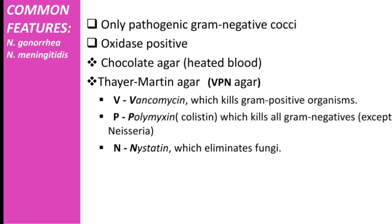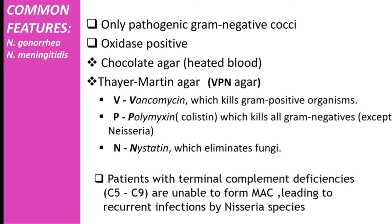Neisseria species commonly infect people recurrently. Patients with terminal complement deficiency, C5 to C9, are unable to form membrane attack complexes, leading to recurrent infections by Neisseria species. Stay tuned because in the next video we are going to start with Neisseria meningitidis. Until next time!